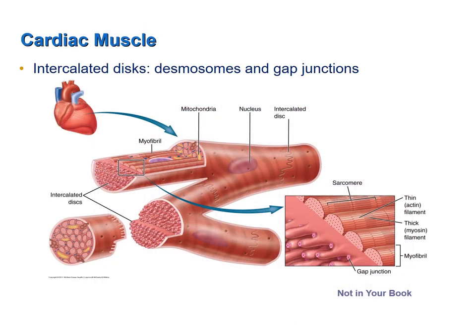This figure from your book shows the general arrangement of cardiac myocytes. Notice that there are intercalated discs between adjacent cardiac myocytes, and again they contain desmosomes and gap junctions. The desmosomes are anchoring junctions — they help prevent the cardiac myocytes from pulling away from one another as the cell contracts. Gap junctions are communicating junctions, allowing ions to move from one cell to the next, so this allows action potentials generated in one cardiac myocyte to spread to adjacent myocytes and then throughout the entire chamber, allowing the chamber as a whole to contract.